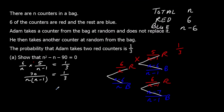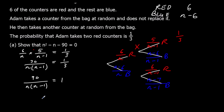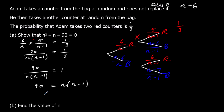Multiplying both sides by 3 gives 90 / [n(n − 1)] = 1. Then multiplying both sides by n(n − 1) gives 90 = n(n − 1). Expanding: n × n = n² and n × (−1) = −n, so 90 = n² − n. Subtracting 90 from both sides gives n² − n − 90 = 0.